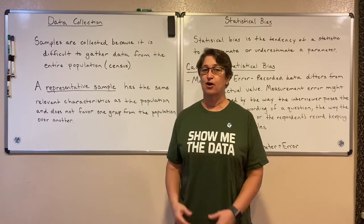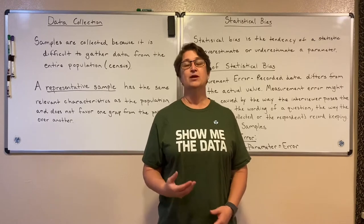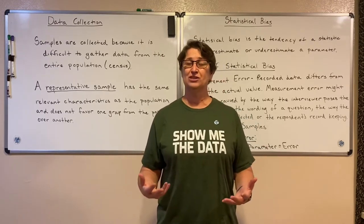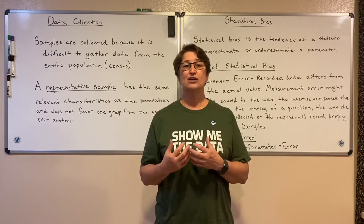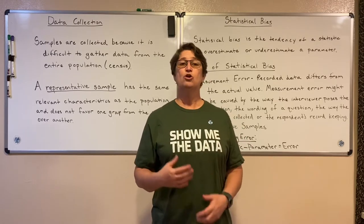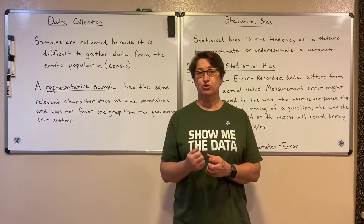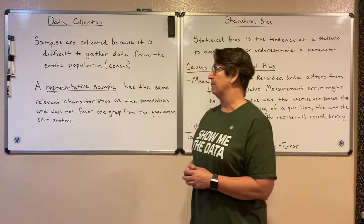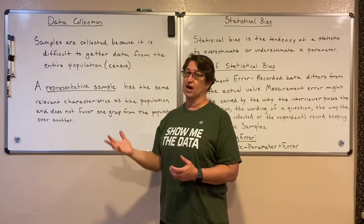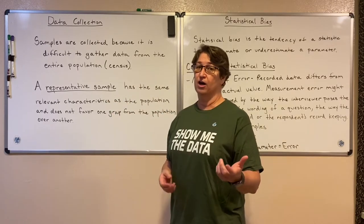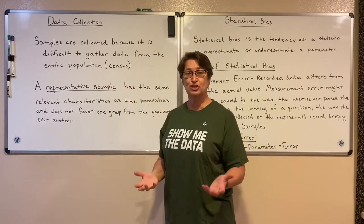We would love to be able to collect data from our entire population. Remember that the population is our entire group of interest. But collecting data from the entire population a lot of times takes time and money and manpower, so it's very difficult to do. So instead what we do is we just collect a sample — data from part of our group of interest. Samples are collected because it's so difficult to gather data from the entire population. When we are able to gather data from the entire population we call that a census. But that's really hard to do, so we just collect samples instead.